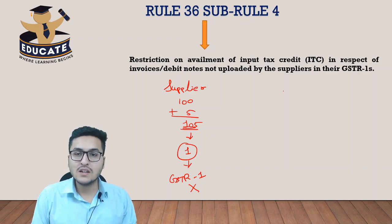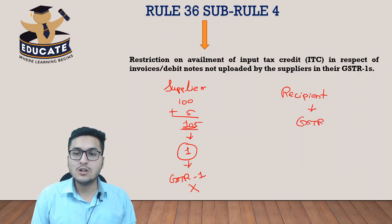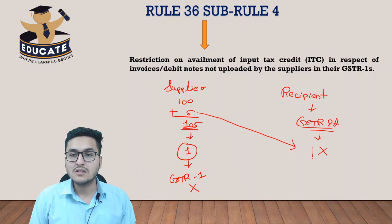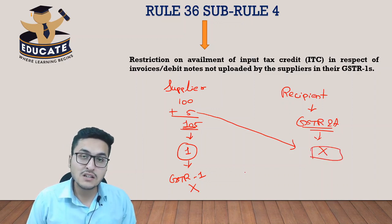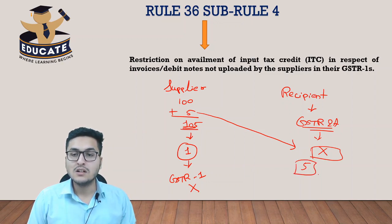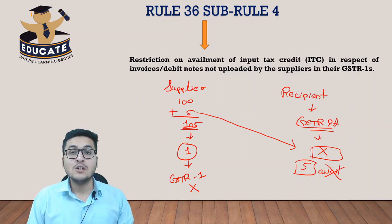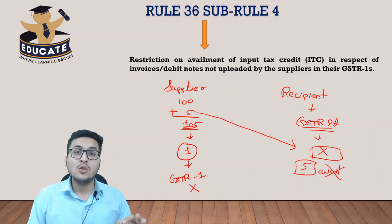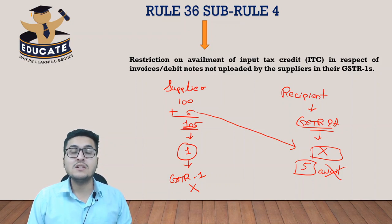So it's obvious that if GSTR-1 has not been uploaded, it will not appear in GSTR-2A. Rule 36 Sub-Rule 4 provides relief to those taxpayers whose input tax credit does not appear in GSTR-2A.